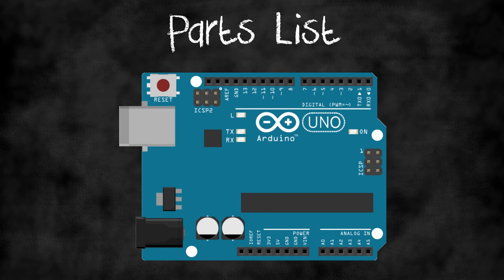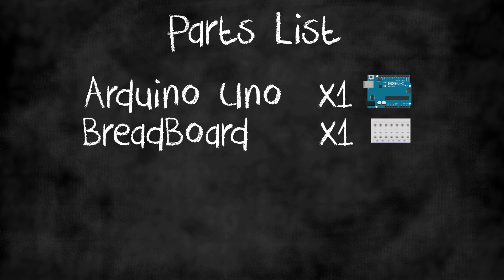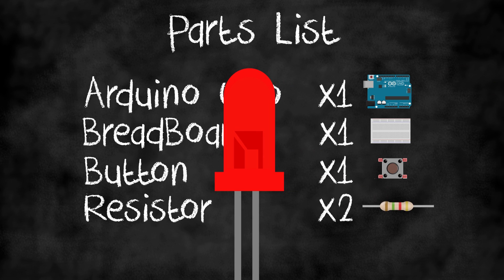The Arduino, a breadboard, a 4-pin push button, two resistors - from my values I chose a 330 ohm and a 1k ohm, and finally a LED.